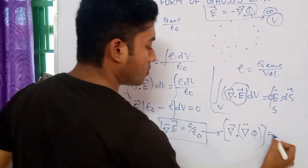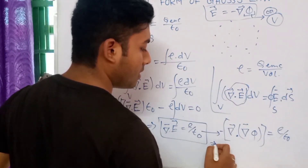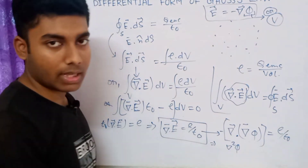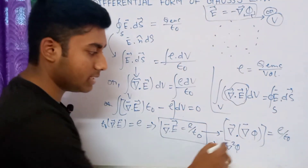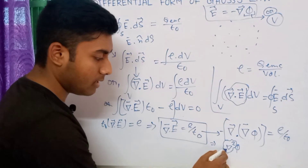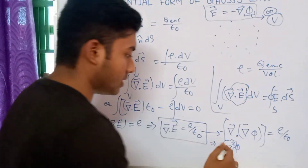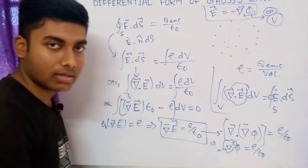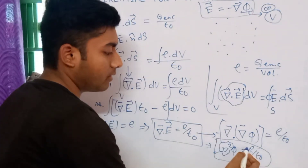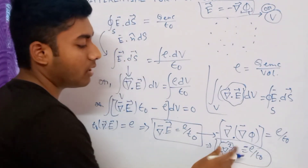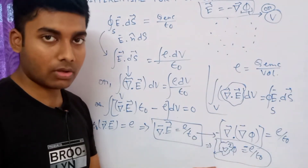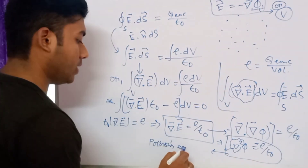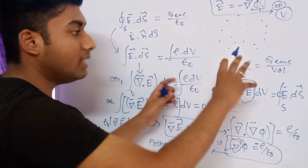This becomes: divergence of gradient of phi equals rho over epsilon naught, which is simply the Laplacian — del squared of phi. So del squared phi equals minus rho over epsilon naught. This equation is known as Poisson's equation, where rho is our charge density.